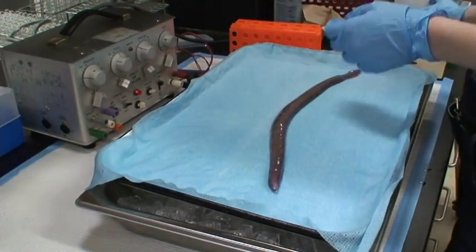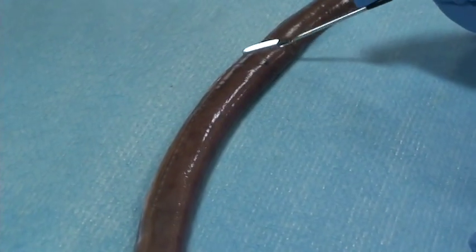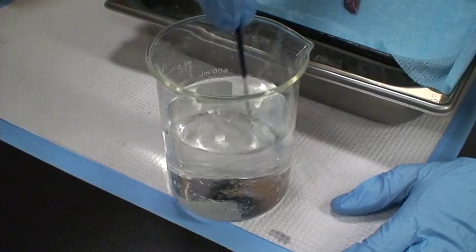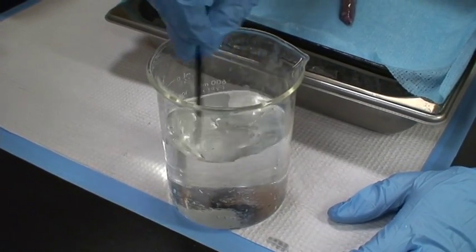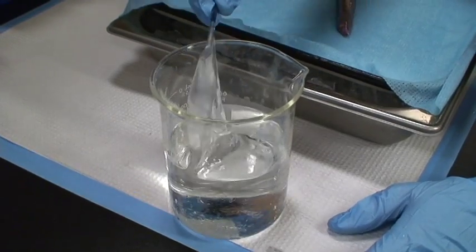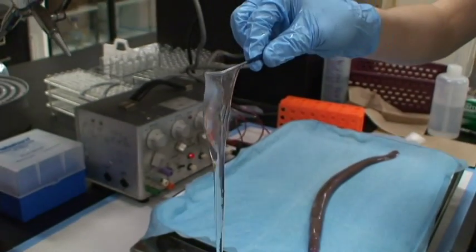There's a glandular fluid that is produced within the slime glands and when the hagfish is disturbed, this fluid is squeezed out of the glands and interacts with seawater to form this bizarre material that we call hagfish slime.